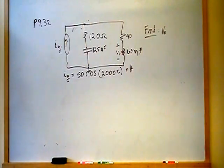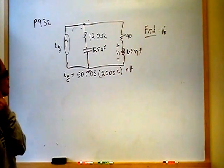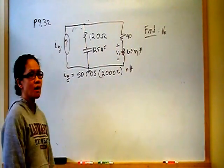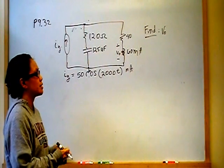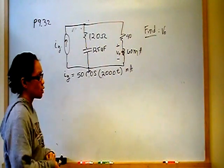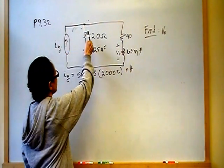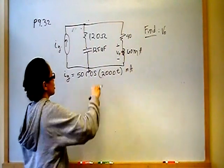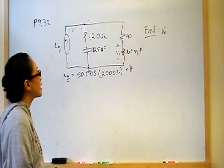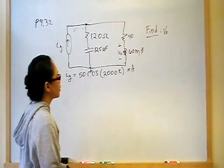This is problem 32 from chapter 9 on the section on Kirchhoff's Laws in the Frequency Domain. The point of this section is to realize that everything we learned about Kirchhoff's Laws still applies: the sum of the currents in and out of a node must be zero, and the sum of voltage drops in a closed mesh must be zero. We have an independent current source going into a node with two parallel branches. One branch has 120 ohms in series with a 12.5 microfarad capacitor, and the other has a 40 ohm resistor in series with a 60 millihenry inductor.